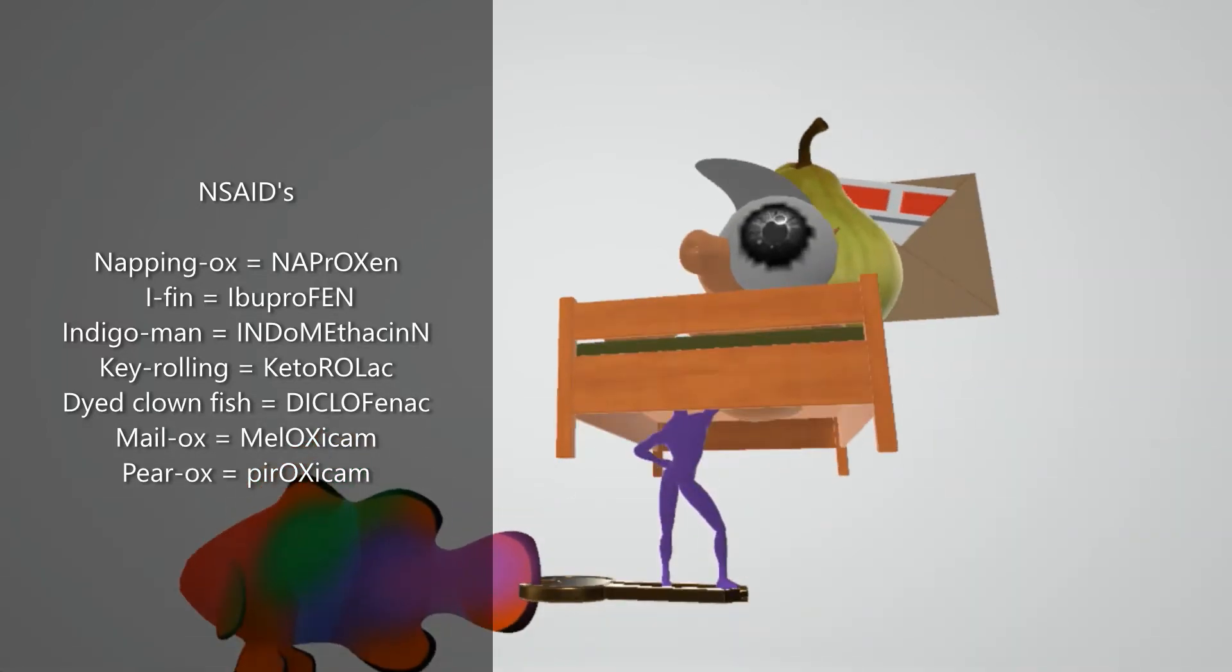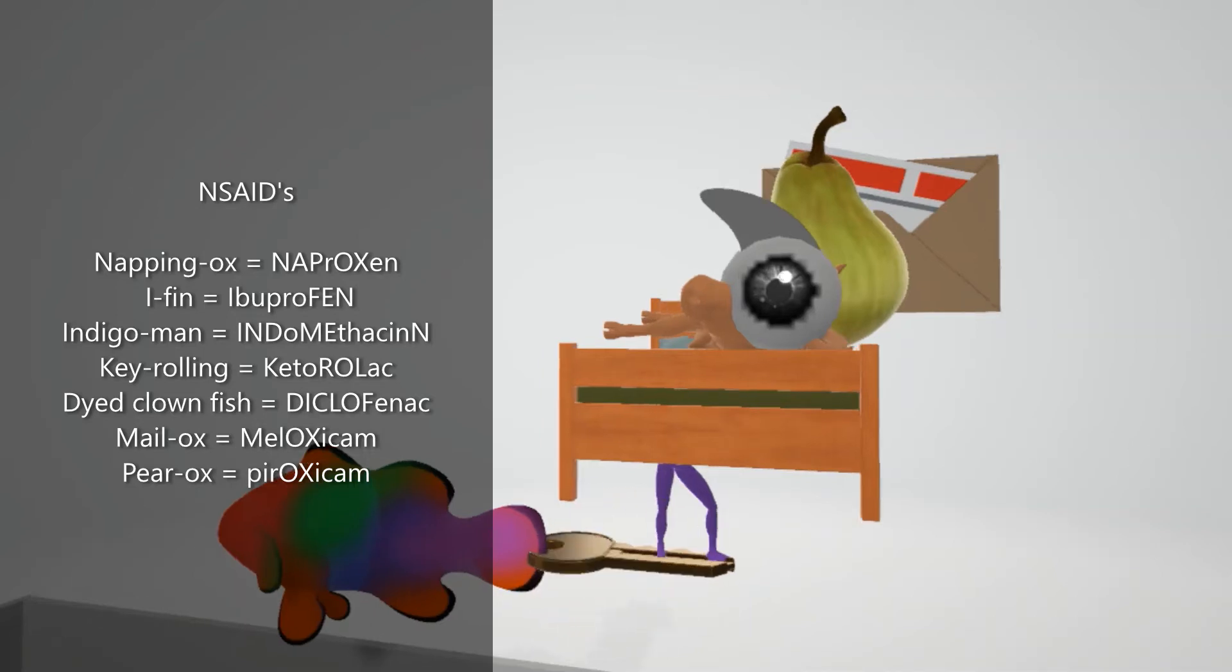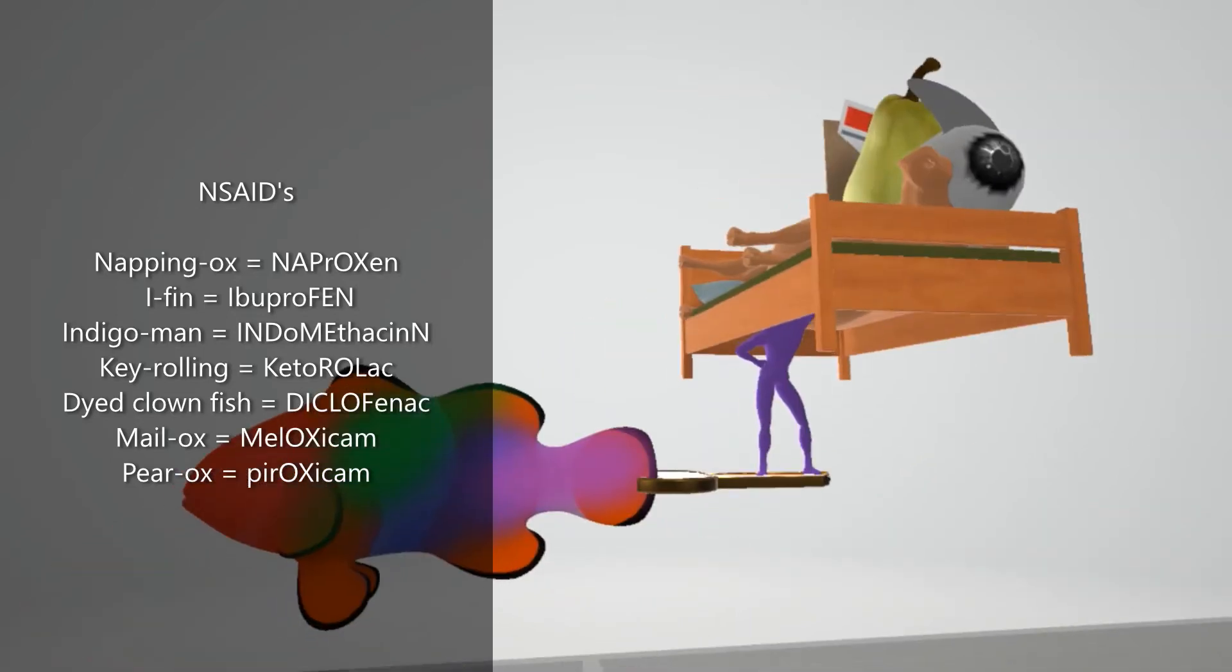Under the ox over here, we have this indigo man, indigo man for indomethacin, and the indigo man is standing on top of this key that's rolling, a key that's rolling for ketorolac. The key that's rolling is attached to this fin of this dyed fish, it's a dyed clownfish for diclofenac.